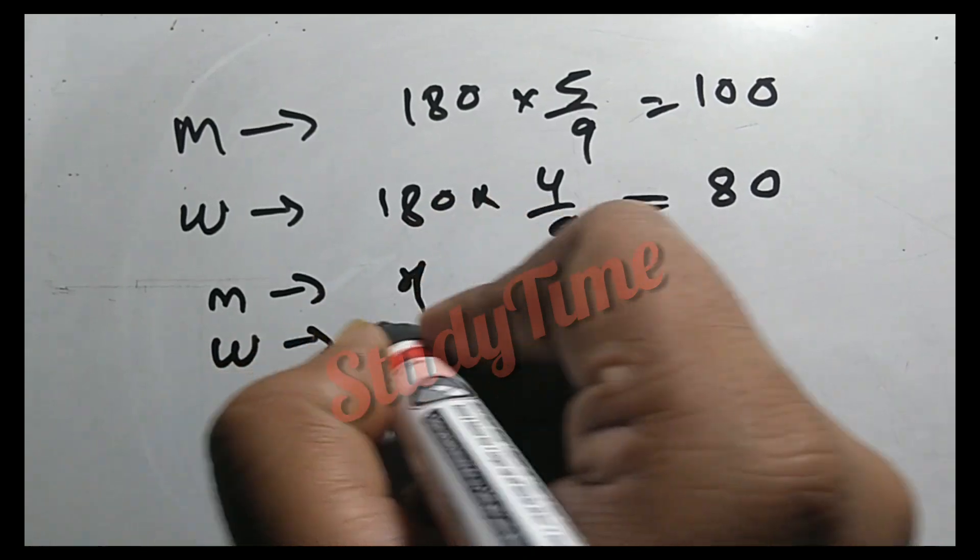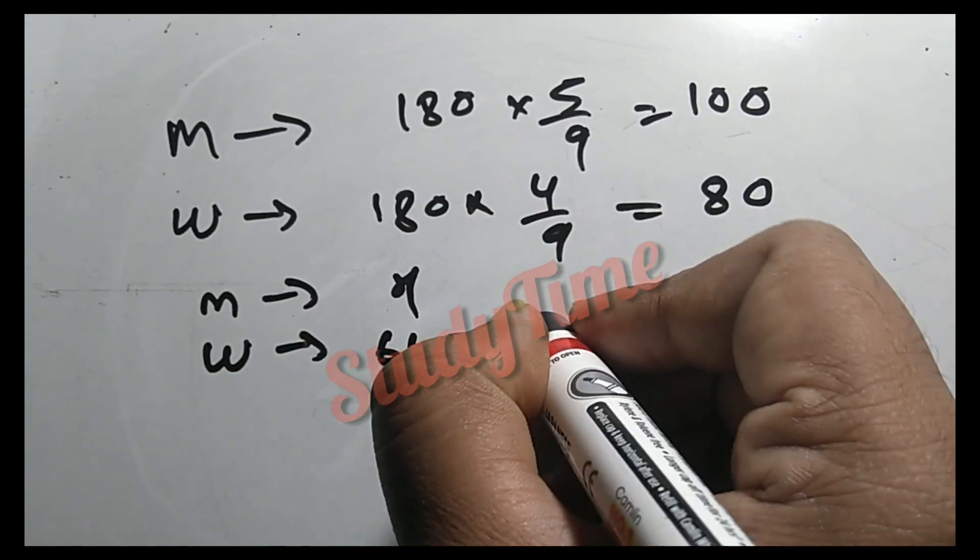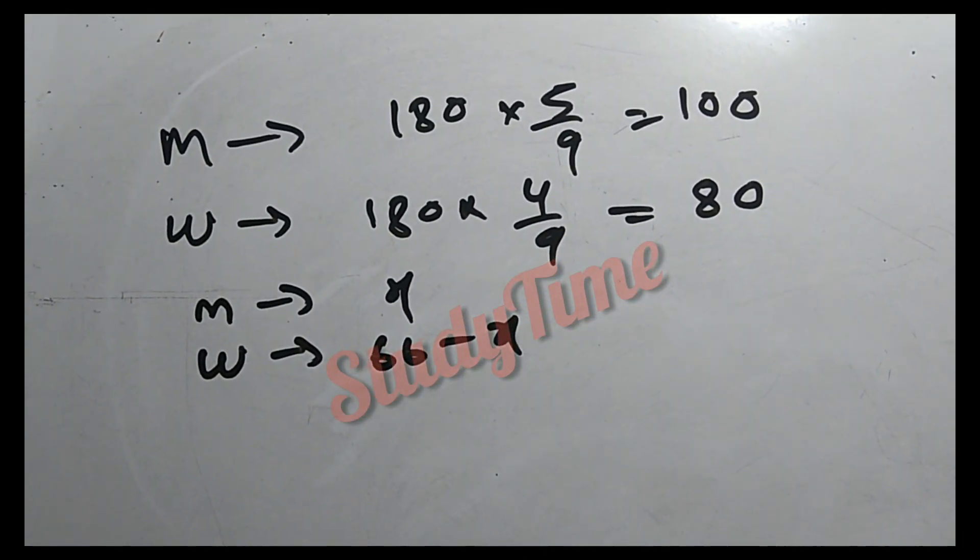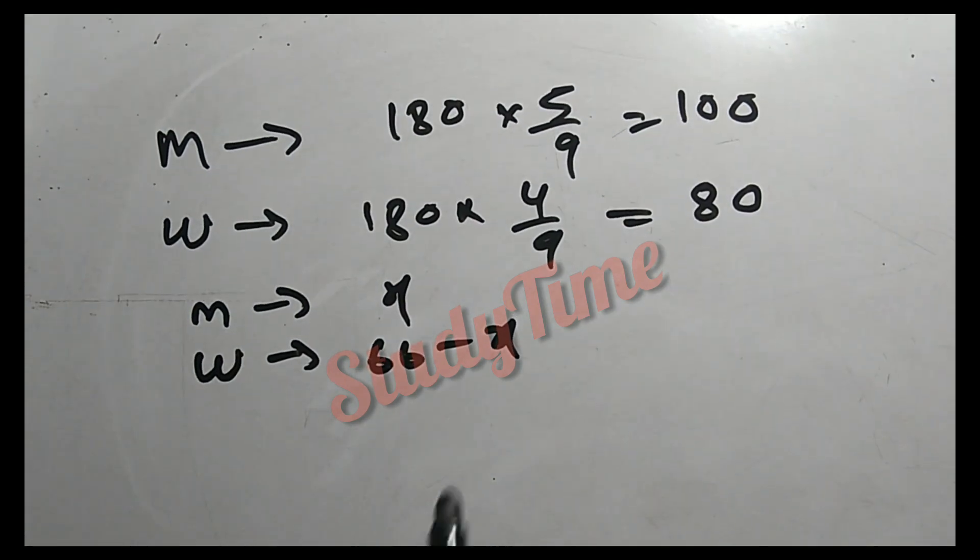So 66 minus x, where x is the number of men. Each man receives money...